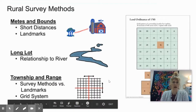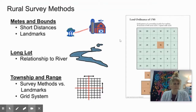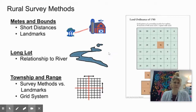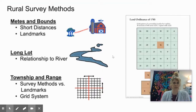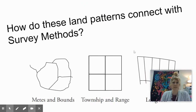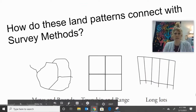Let's look at how these patterns came about and how they're surveyed. I want you to write a quick definition and then a sketch. Metes and bounds is going to be mostly for short distances and is figured through landmarks. Long lot is always going to have a relationship to a river — note in your notes where these are found. Township and range is very much like a grid system.